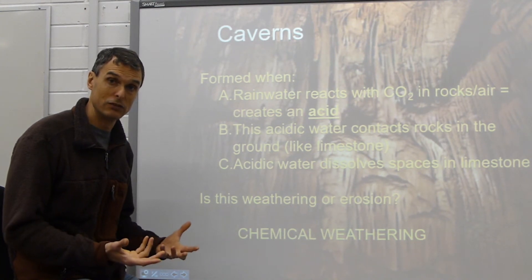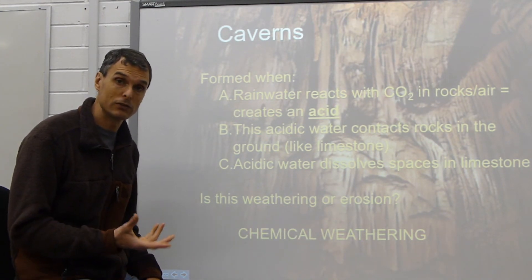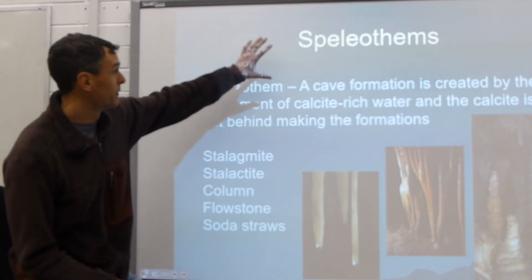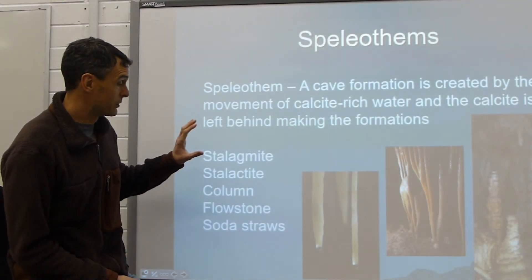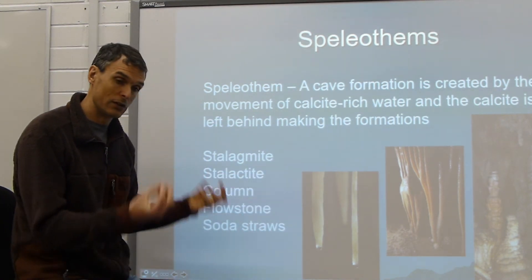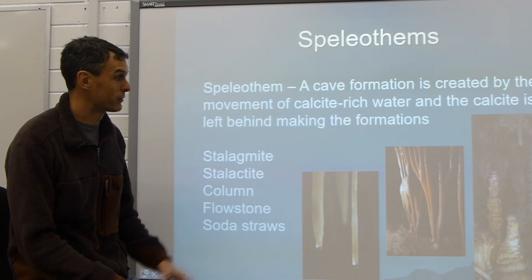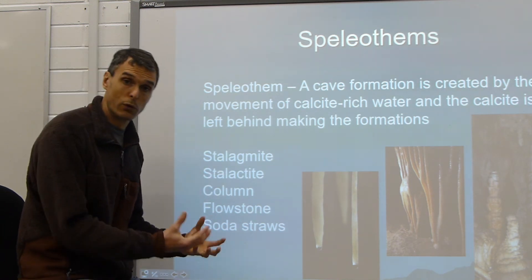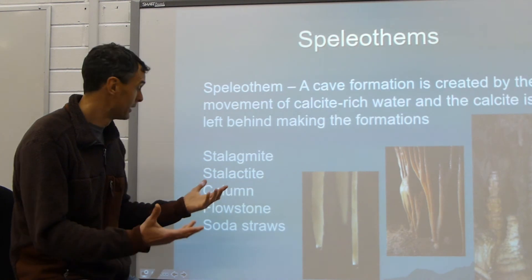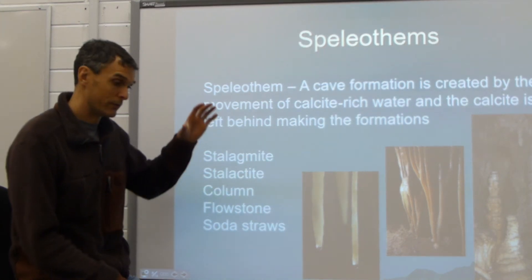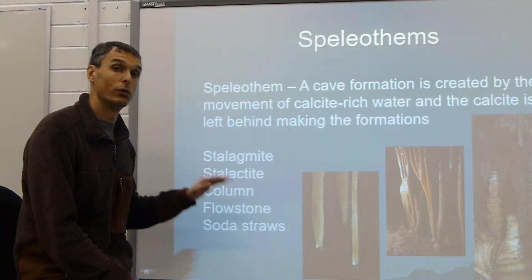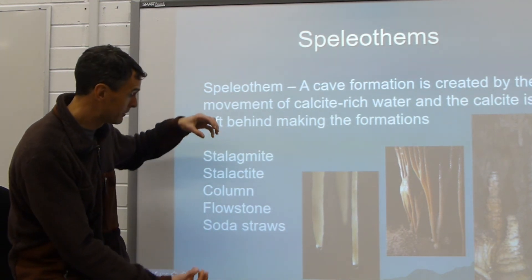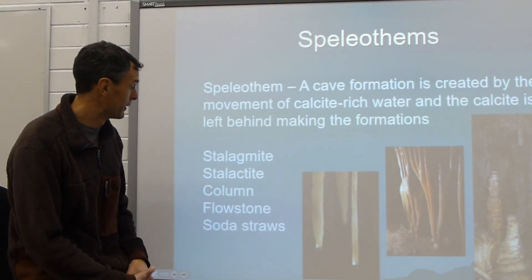If you need to pause the video to write this information down, please do that. I want to talk about some of the cave features. Our fancy science term for a cave feature is called a speleothem. Water moving through the caves dissolves calcite out of the limestone and deposits it elsewhere, creating different cave features. A stalagmite is on the floor of the cave, reaching up toward the ceiling. A stalactite is from the ceiling of the cave moving down toward the floor — it has to hold on tight to the ceiling, which is how you can remember the two apart. A column is when a stalagmite and a stalactite grow together, forming a continuous feature from the floor up to the ceiling.